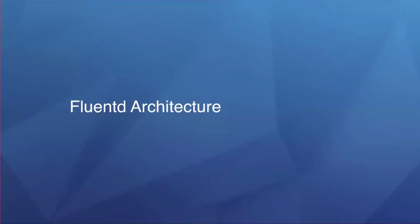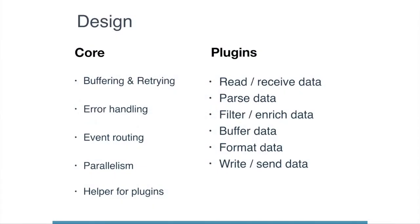Next is Fluentd architecture. Fluentd consists of the core part and the plugin parts. The core provides several important features for data collection — for example, plugins don't need to implement complicated buffering or retry mechanisms in each implementation. If an output plugin hits a temporary failure, Fluentd automatically retries until success.